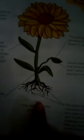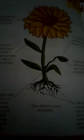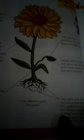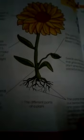The first part is the root, which helps the plant grow under the ground. Roots absorb water from the ground and carry food and nutrition to the plant.